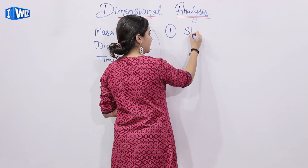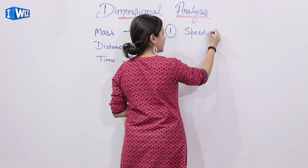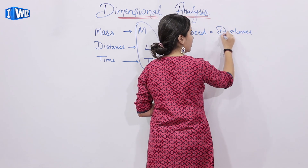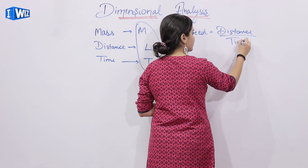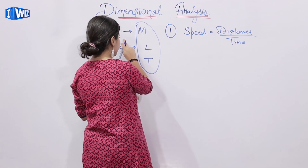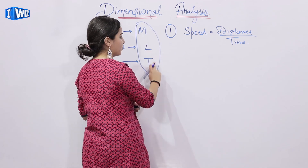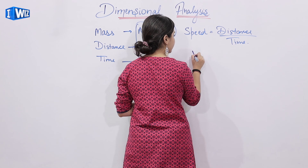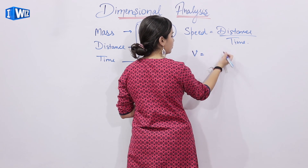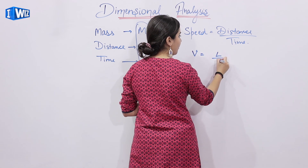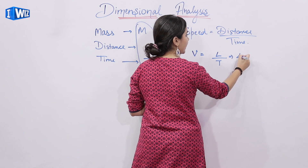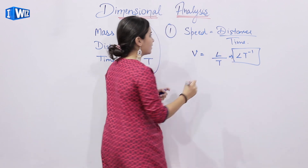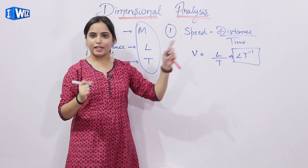If we calculate speed, that is equals to distance upon time. For distance we have L and for time we have T. So speed V is equals to distance L upon T, which is L T minus 1. So the dimensions of speed is L T minus 1.